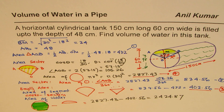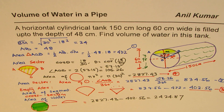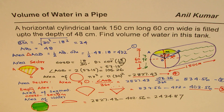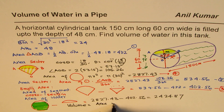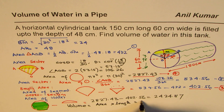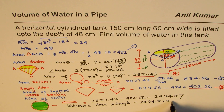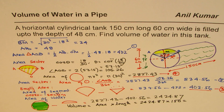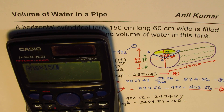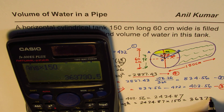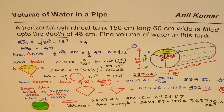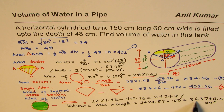Now we can find the volume of water in the tank. Volume equals area times length, so it is 2424.87 times 150, which gives 363730.5 cm³. So we can say the volume of water is approximately 363730 cm³.